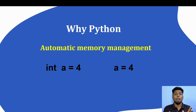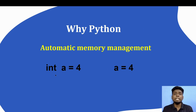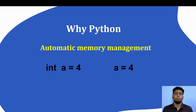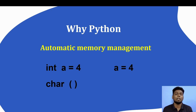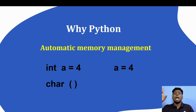In Python, if you mention int, the memory is automatically allocated. This is automatic memory allocation. Same for characters — if you want to make a variable for characters or alphabet, and you haven't mentioned the type, Python handles it automatically. The type is inferred — that is Python.